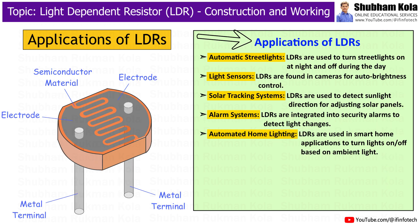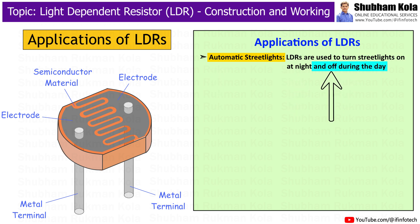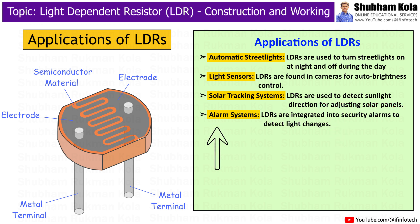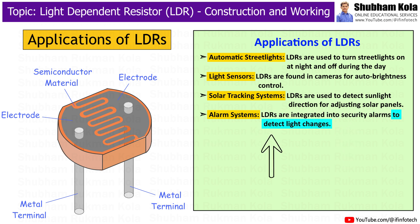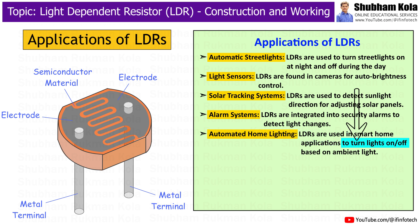Next are the applications of LDRs. LDRs are used in automatic streetlights to turn them on at night and off during the day. They are also used to detect sunlight direction for adjusting solar panels. LDRs are integrated into security alarm systems to detect light changes, and used in smart home applications to turn lights on and off based on ambient light.